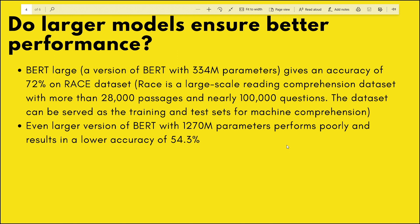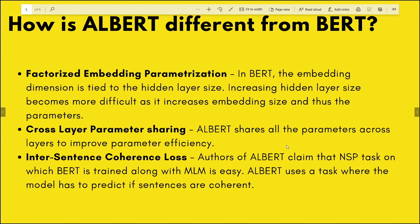The question the ALBERT paper's authors answer is: do large models ensure better performance? They trained a version of BERT with twice the parameters of BERT Large and found that accuracy on a few NLP tasks actually got worse when they increased the number of parameters. For example, BERT Large had 334 million parameters giving 72% accuracy on the RACE dataset, but a version with 1,270 million parameters performed poorly at only 54.3% accuracy. This highlights that not every large model performs better.